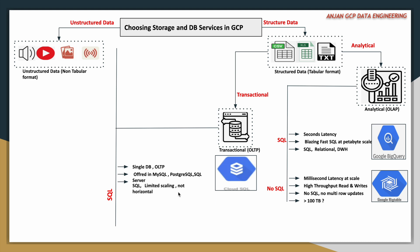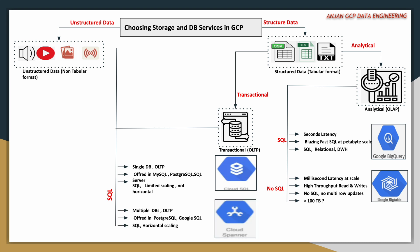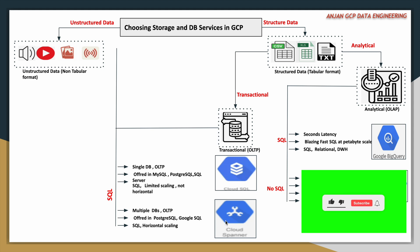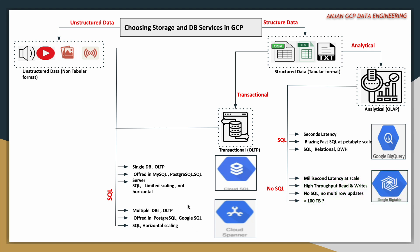But if you are expecting horizontal scaling capability for OLTP systems, you can go for Cloud Spanner. This also supports SQL and horizontal scalability, and it is offered in two different flavors: PostgreSQL and Google Standard SQL.